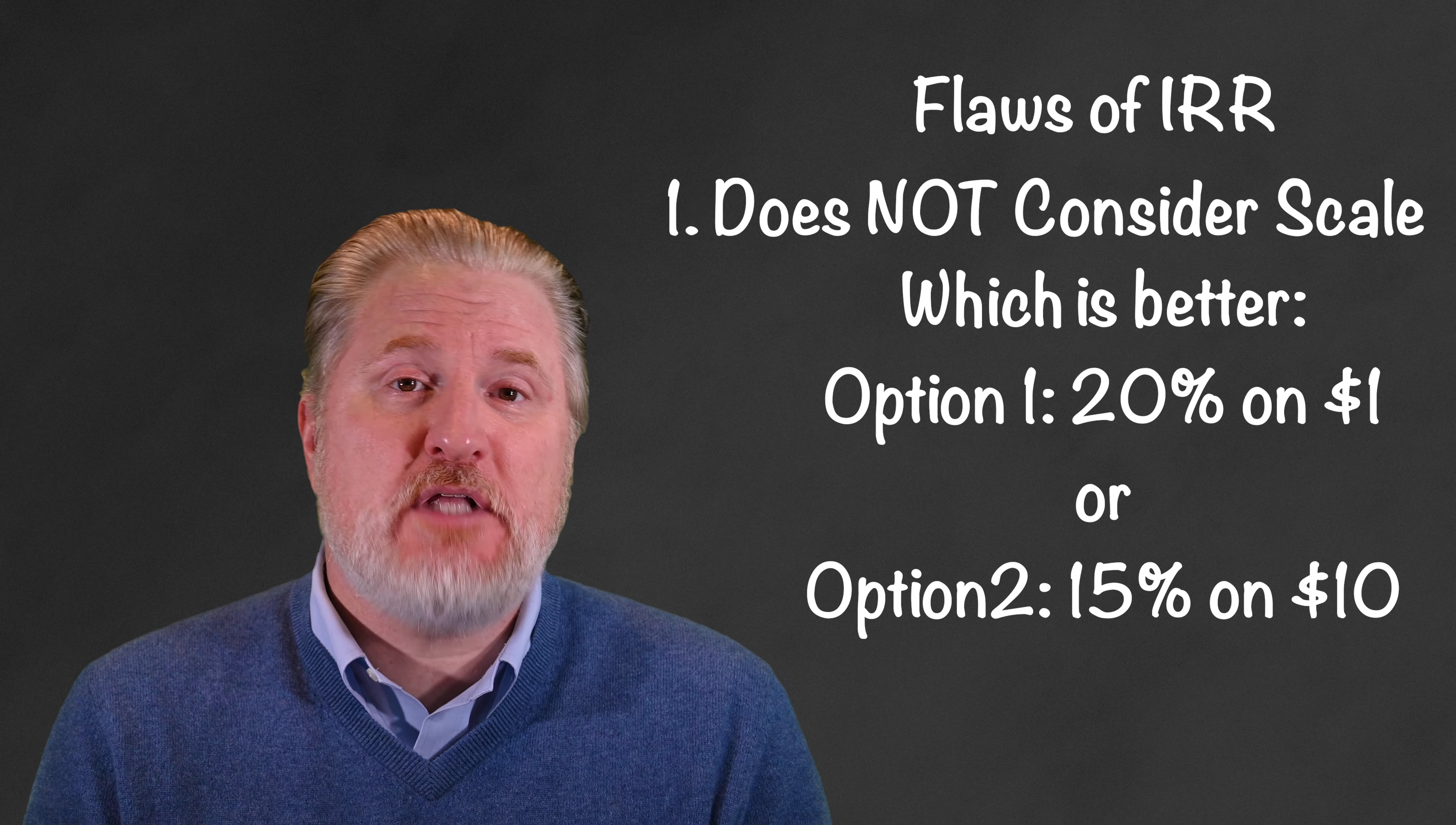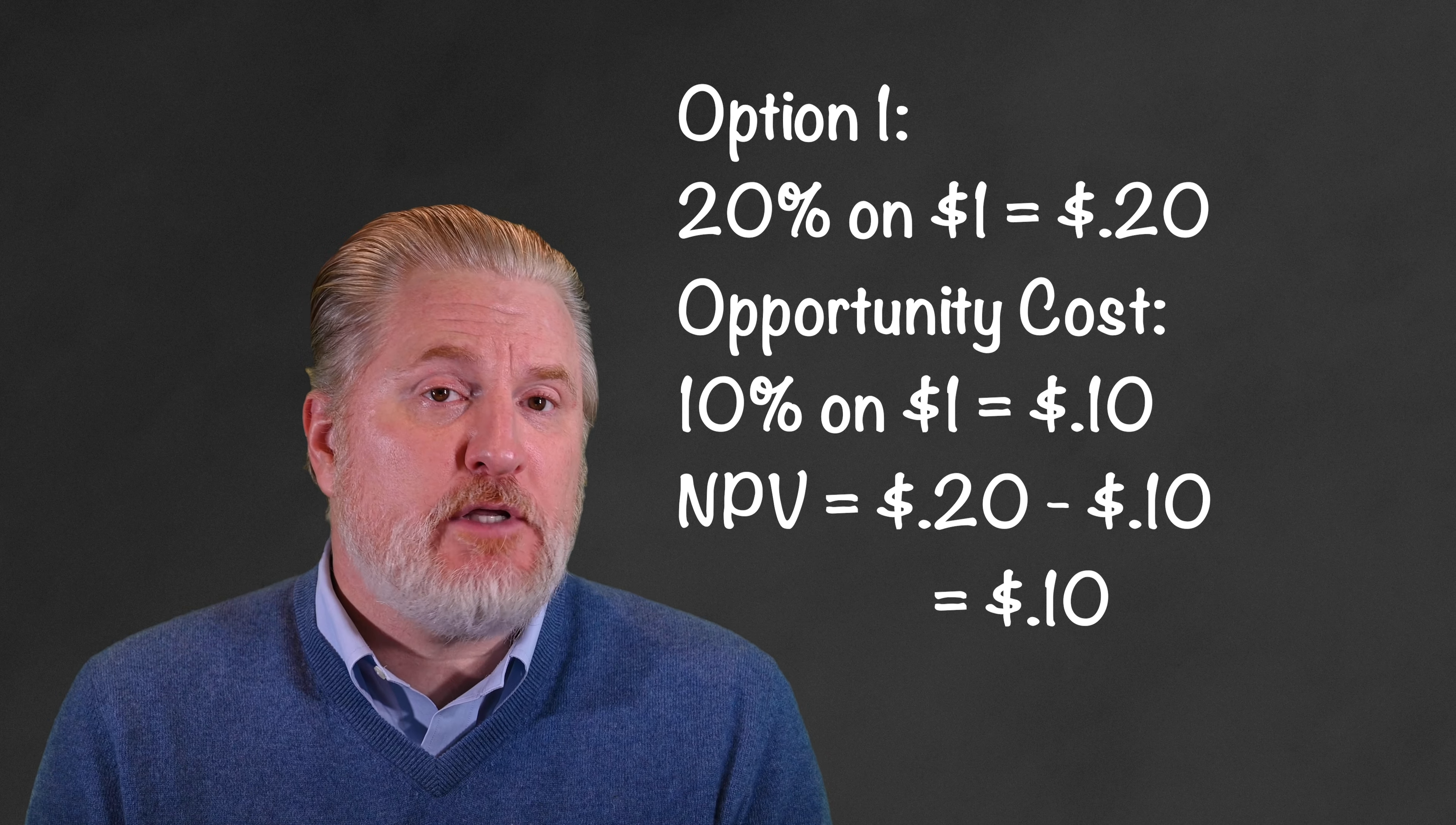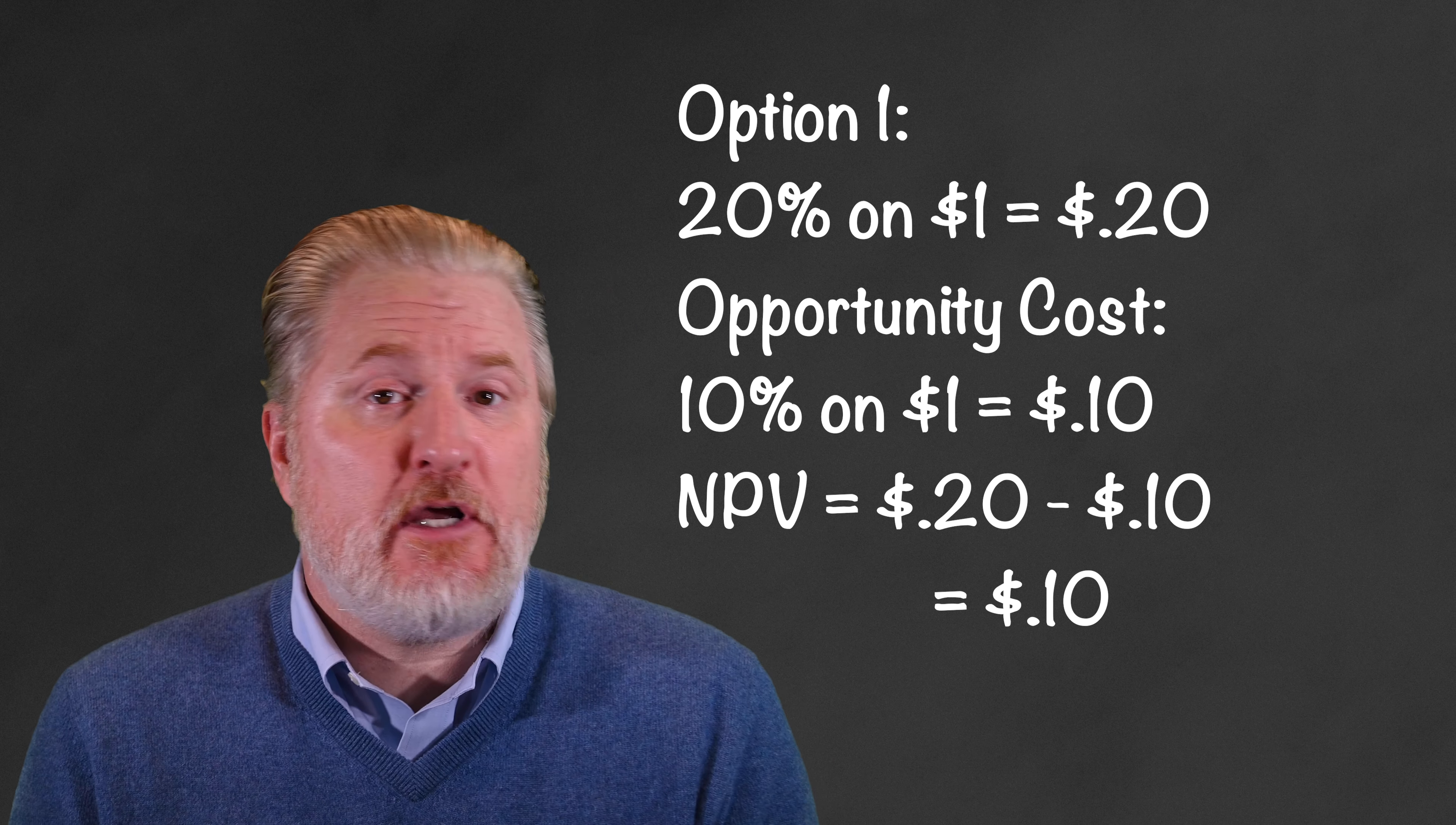Well, as long as your cost of capital is less than 15%, let's say 10% in this example, both would have a positive NPV. So you might be tempted to choose the investment that yields 20%, the higher IRR. The problem with that is that earning 20% on a dollar when you could earn 10% someplace else leaves you only with a positive NPV of $0.10, calculated as the $1 times 20% what you earn on this opportunity minus $1 times the 10% cost of capital.